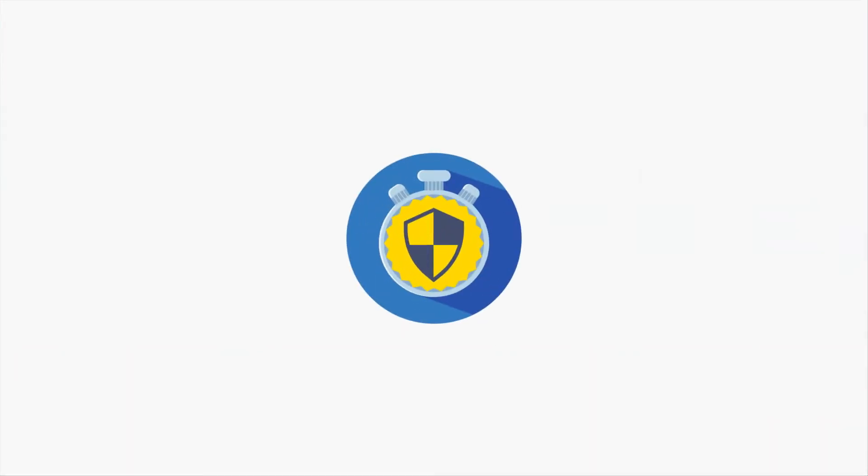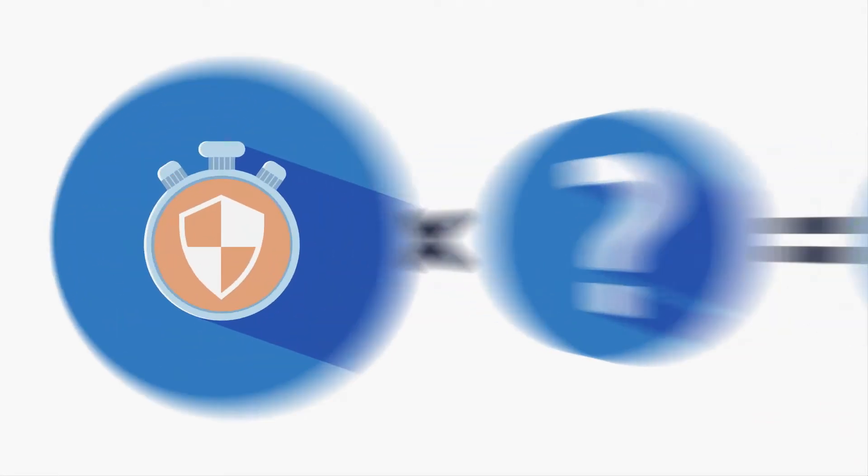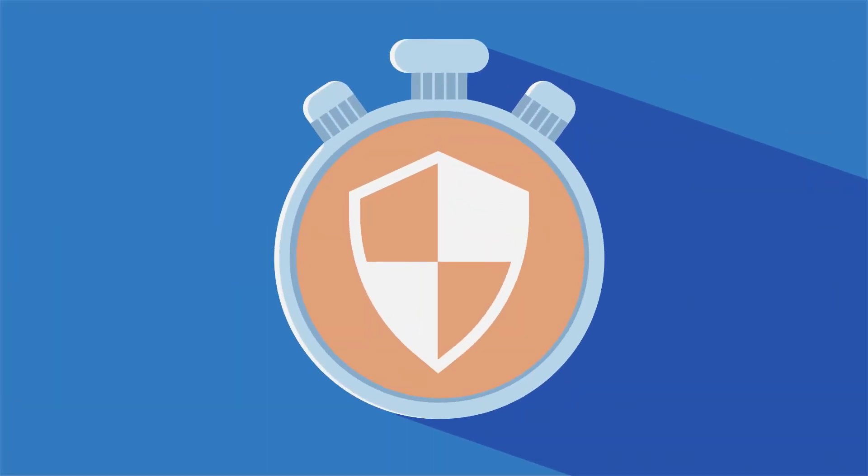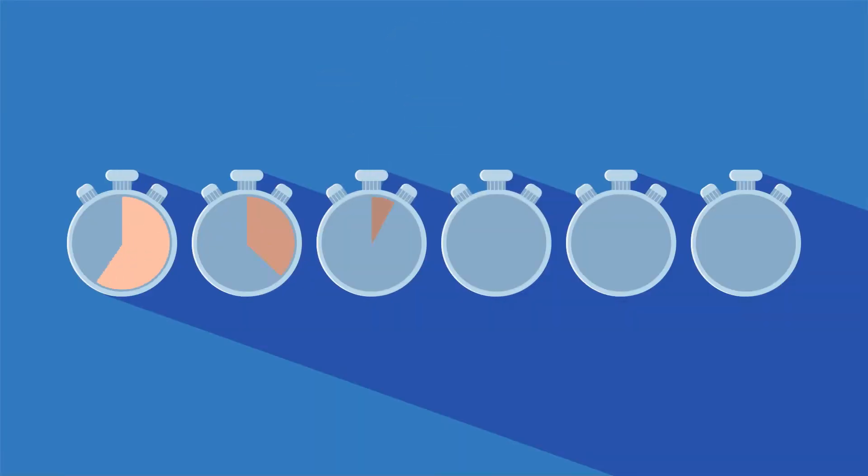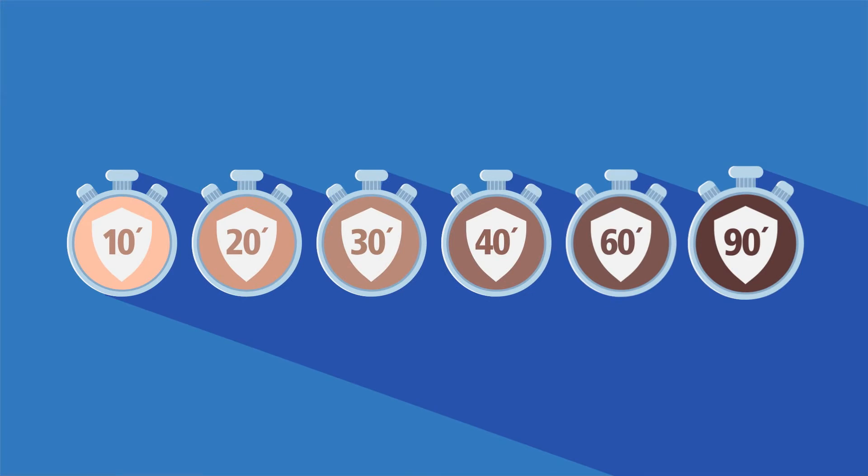Therefore, a safe sunscreen is always dependent on two factors. First, the self-protection time of your skin. This is how long your skin can be exposed to the sun without getting a sunburn. And it depends on a number of factors, above all, the color of your skin.